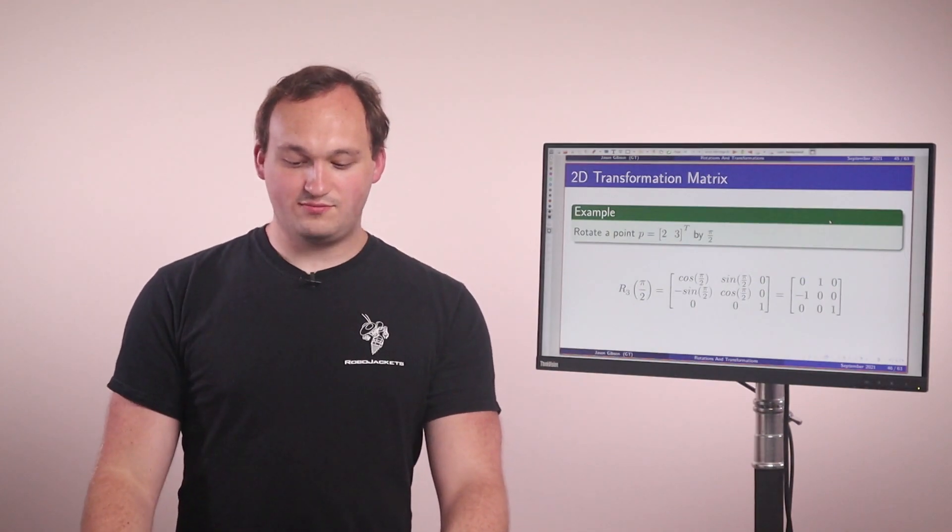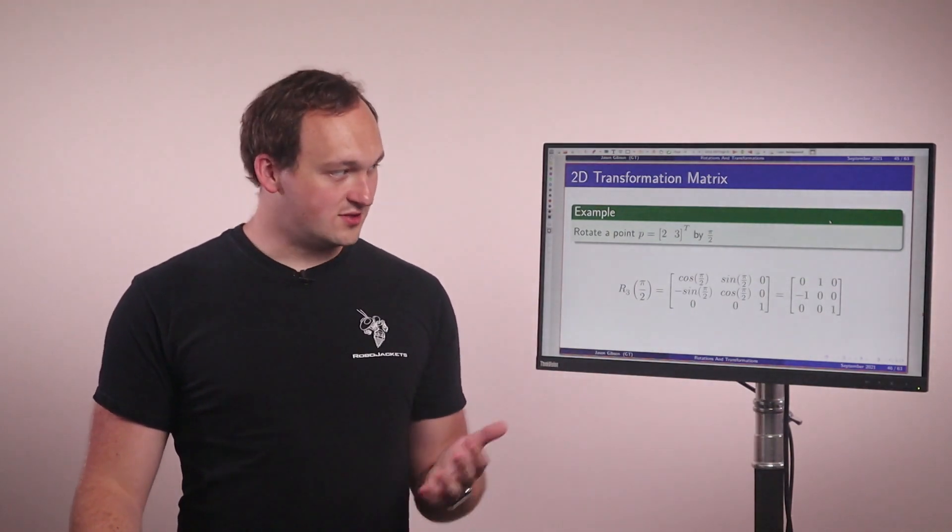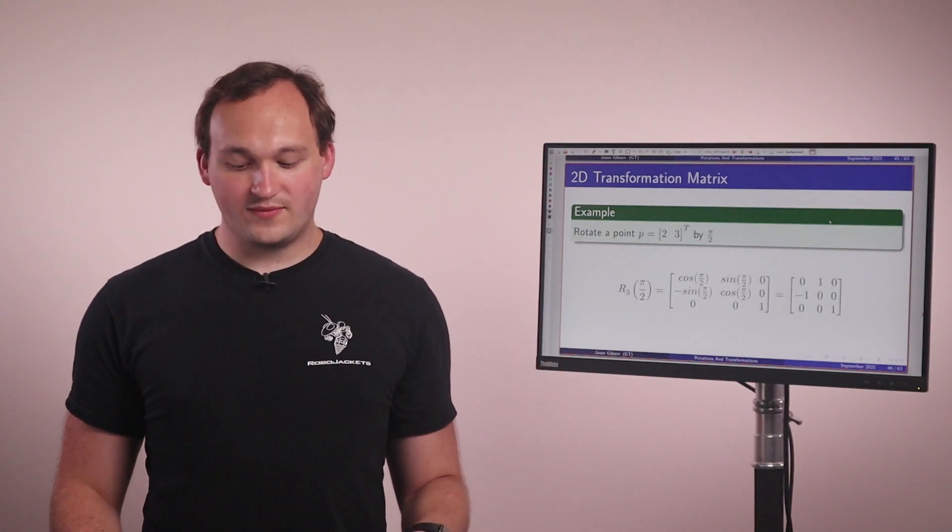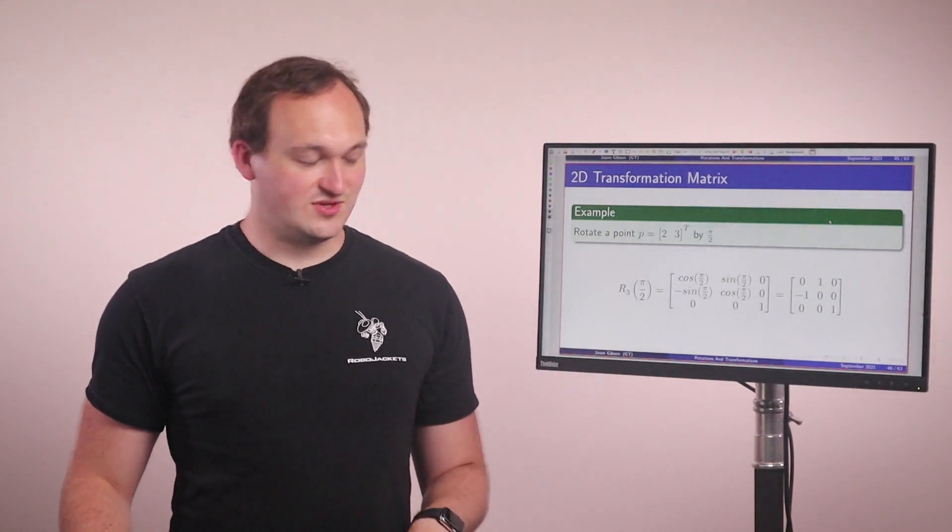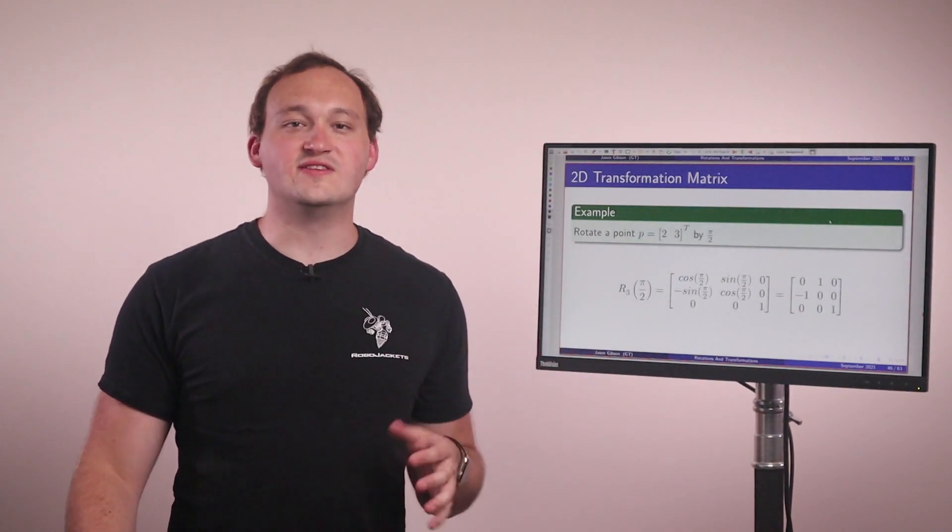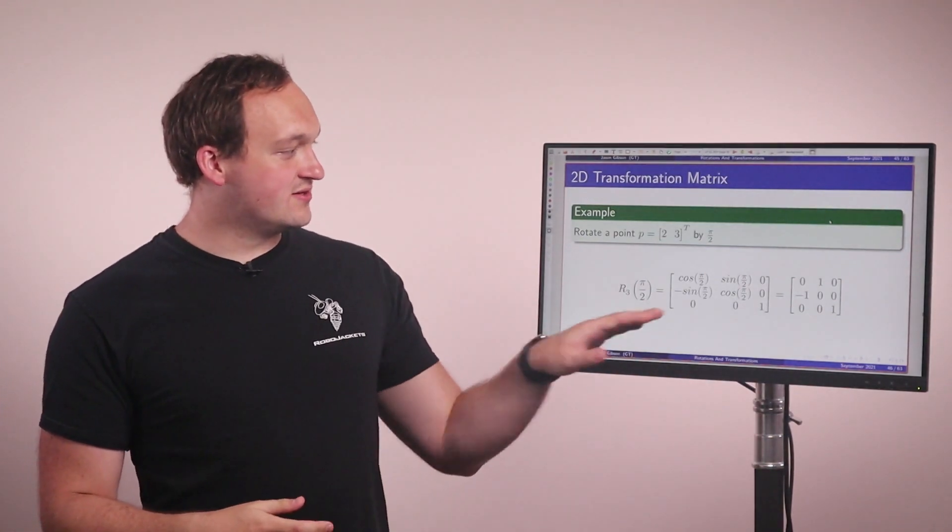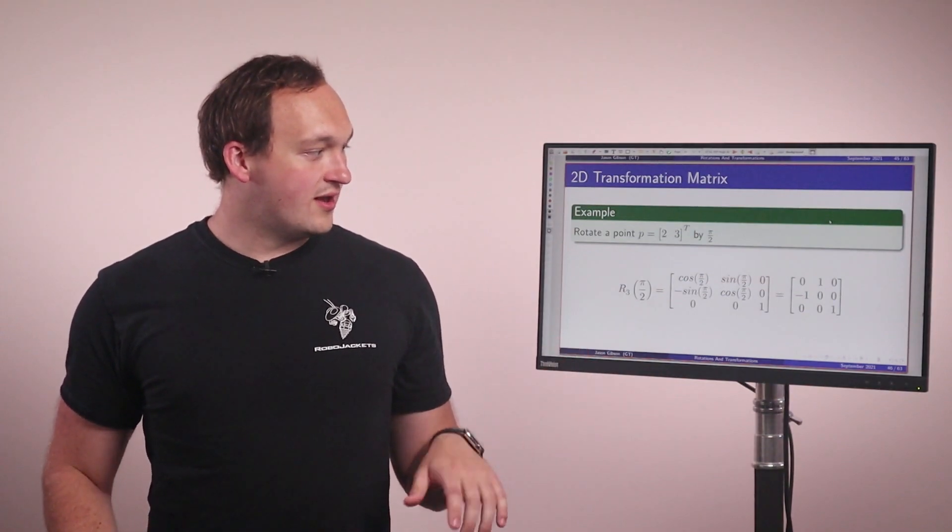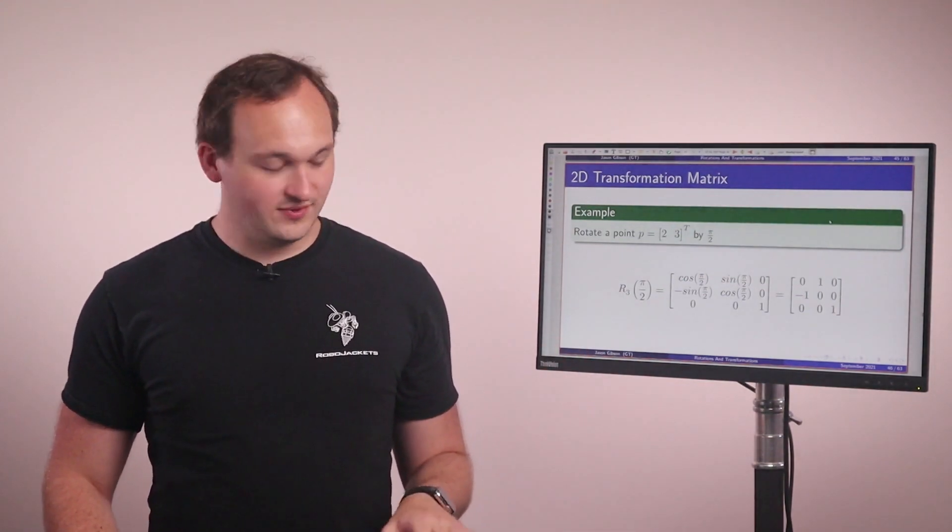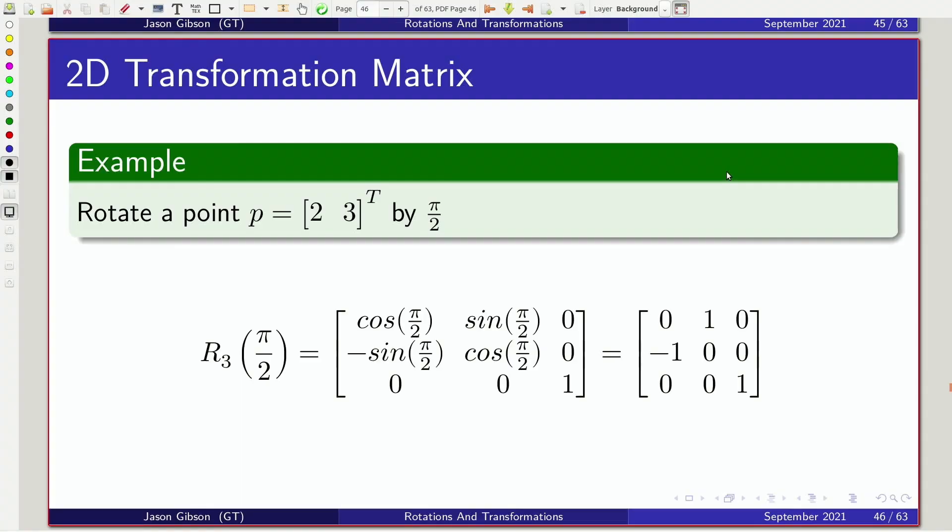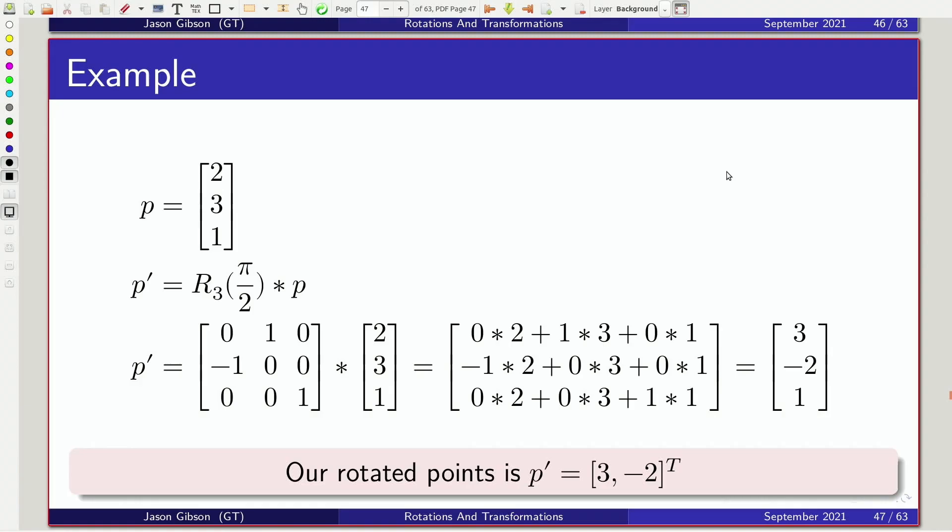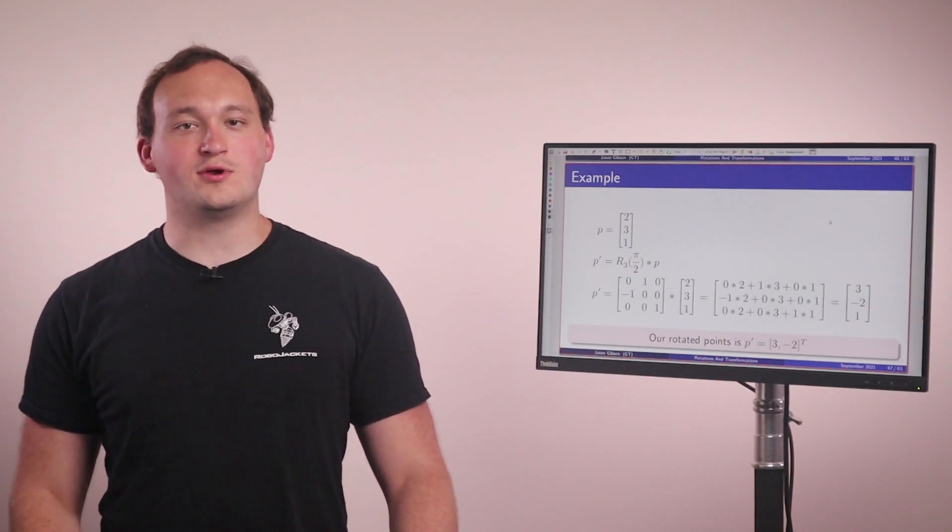So as an example, we will take a point P, which is represented by the vector 2, 3, so 2 in the X and 3 in the Y, and we're going to rotate it by pi over 2. So we take our rotation matrix R3. This is the one that's defined around the Z axis because since we are on a 2D plane, we're rotating around the Z. So that is the rotation matrix we have there. And we have no translation in this rotation example. So these two are left as 0. So if we simplify that out, we get that value. And then we take our point P, we augment it with our 1 and we multiply the two together. We end up with 3, negative 2, 1. If you plotted these two points, you would see a 90 degree rotation between them.